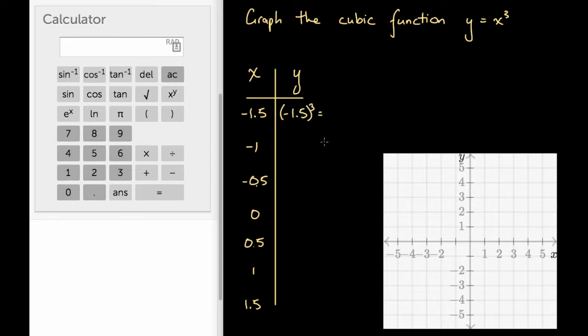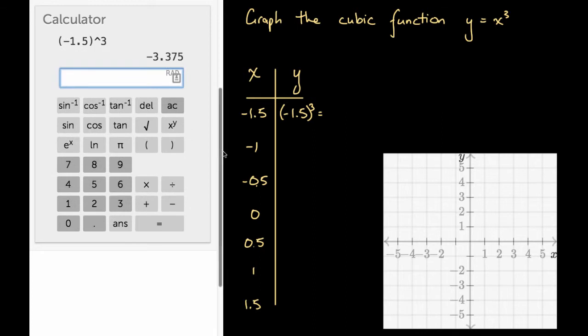It's hard to figure out in our heads, so let's go to our calculator here on the left. Let's type in minus 1.5, and we'll do that all cubed. That is going to be evaluated to minus 3.375.